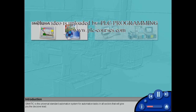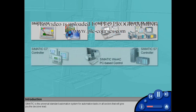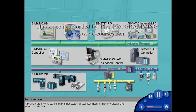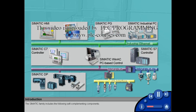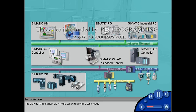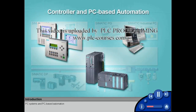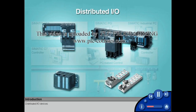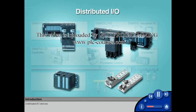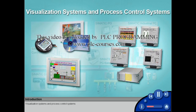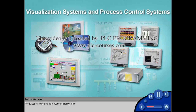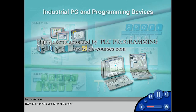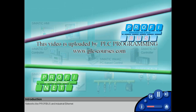SIMATIC is the universal standard automation system for automation tasks in all sectors that will give you the decisive lead. The SIMATIC family includes the following self-complementing components: PC systems and PC-based automation, distributed I/O devices, visualization systems and process control systems, industrial PCs and programming devices, and networks like PROFIBUS and industrial Ethernet.